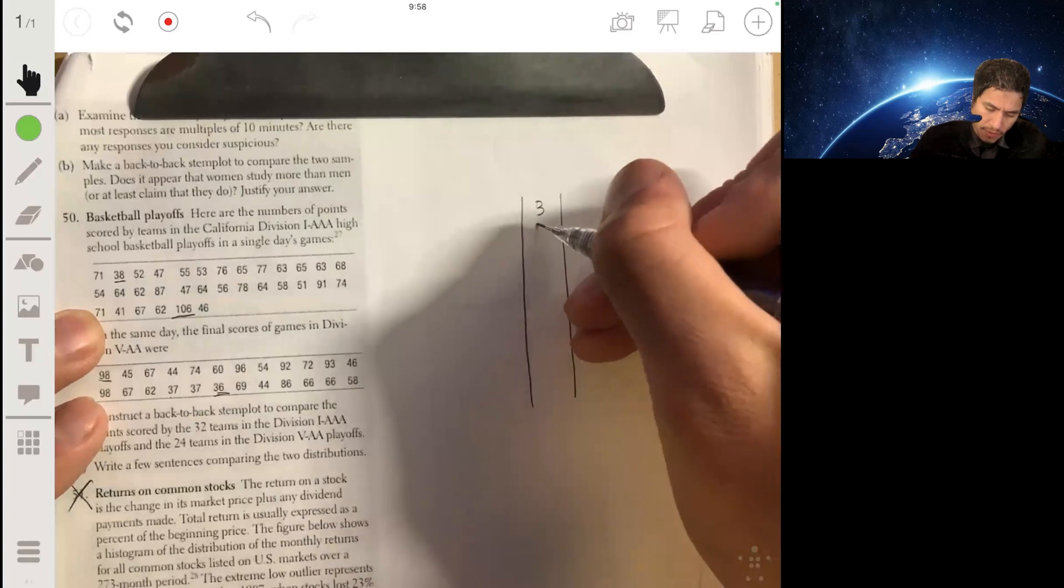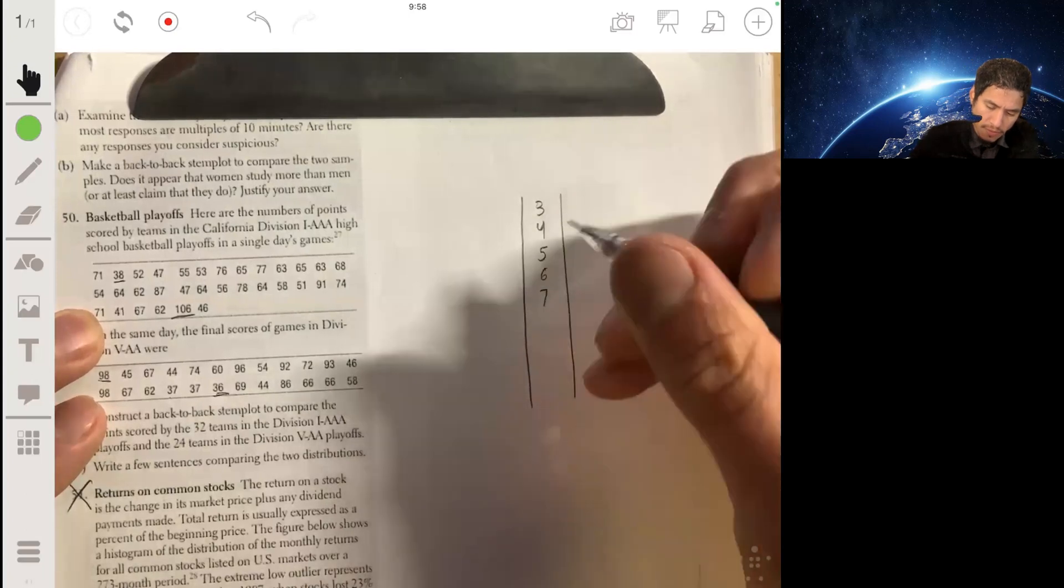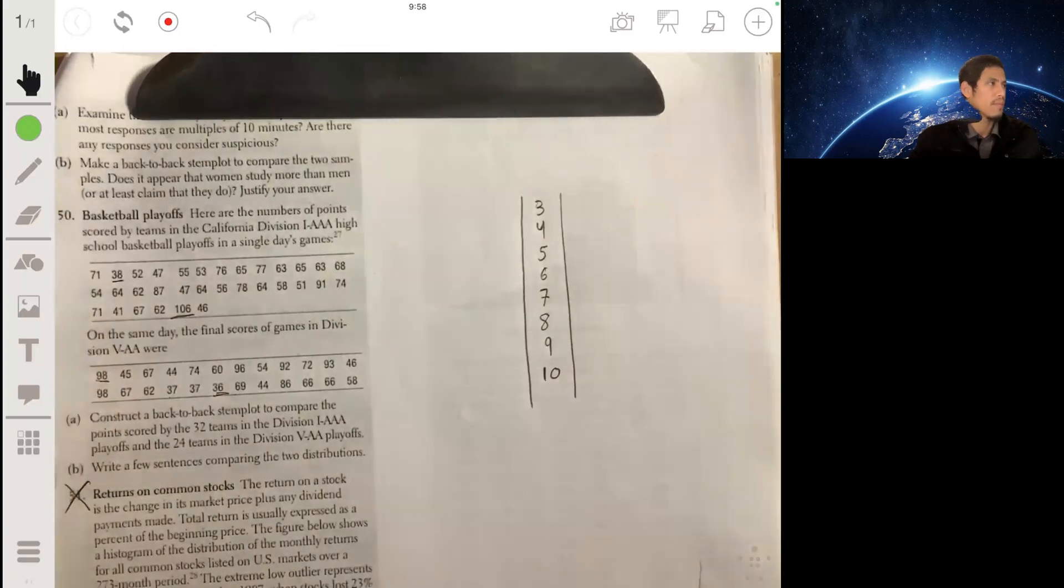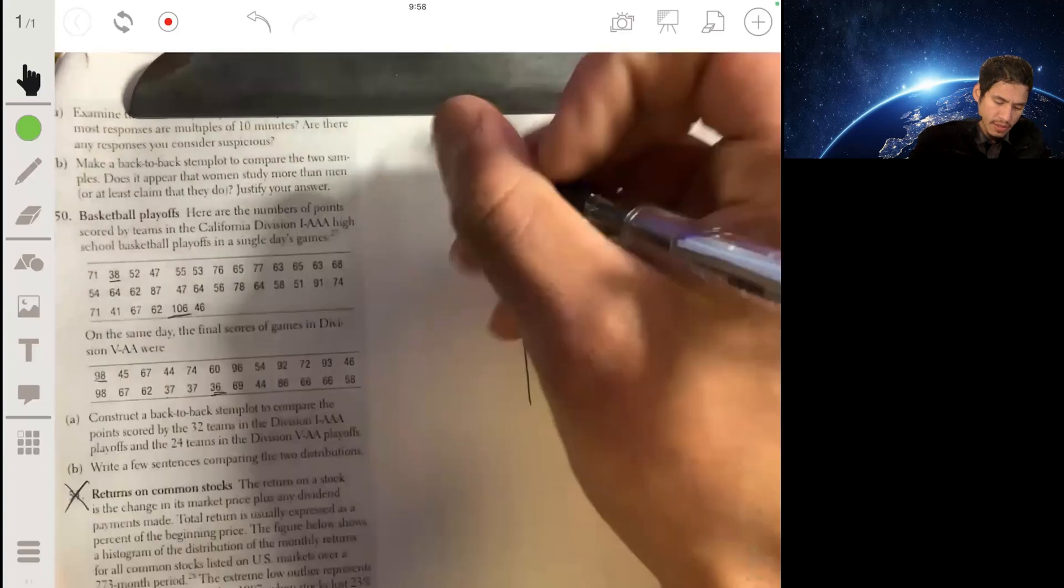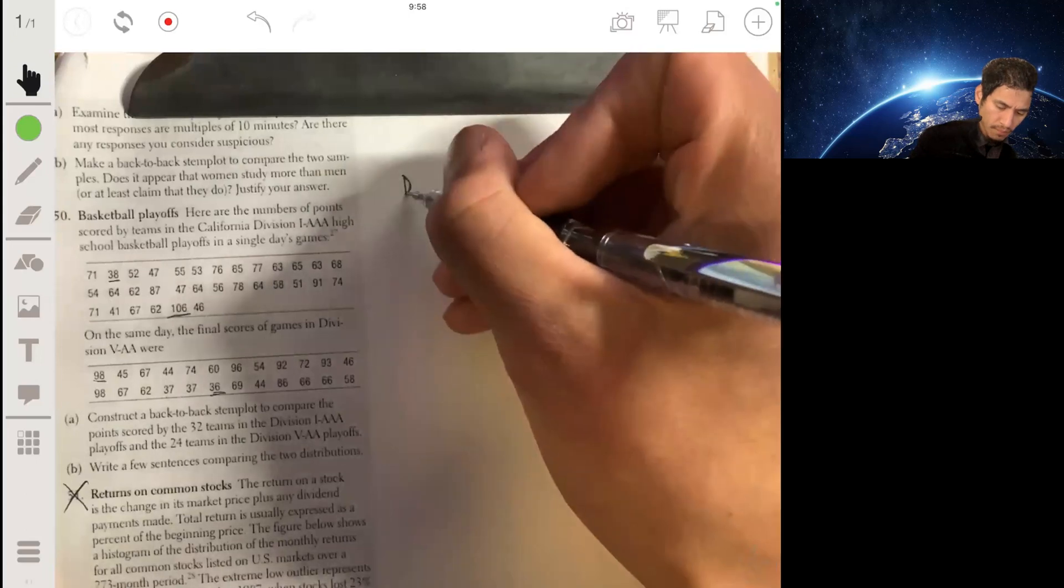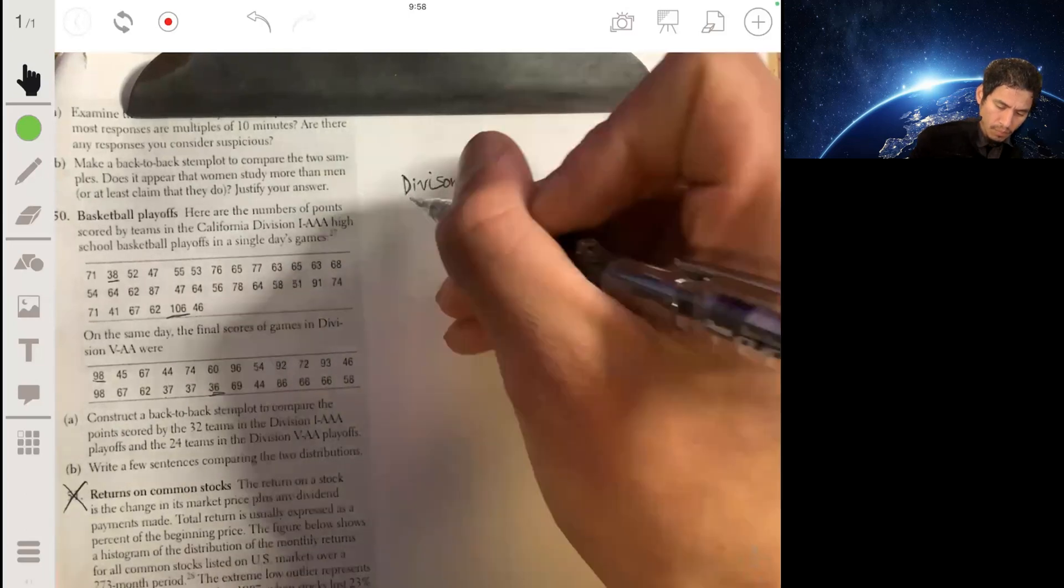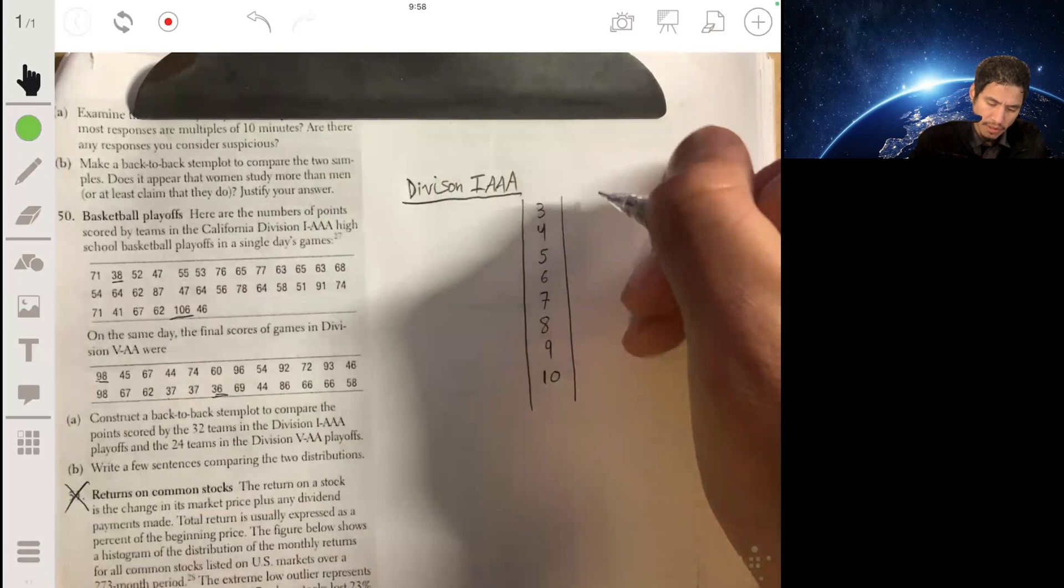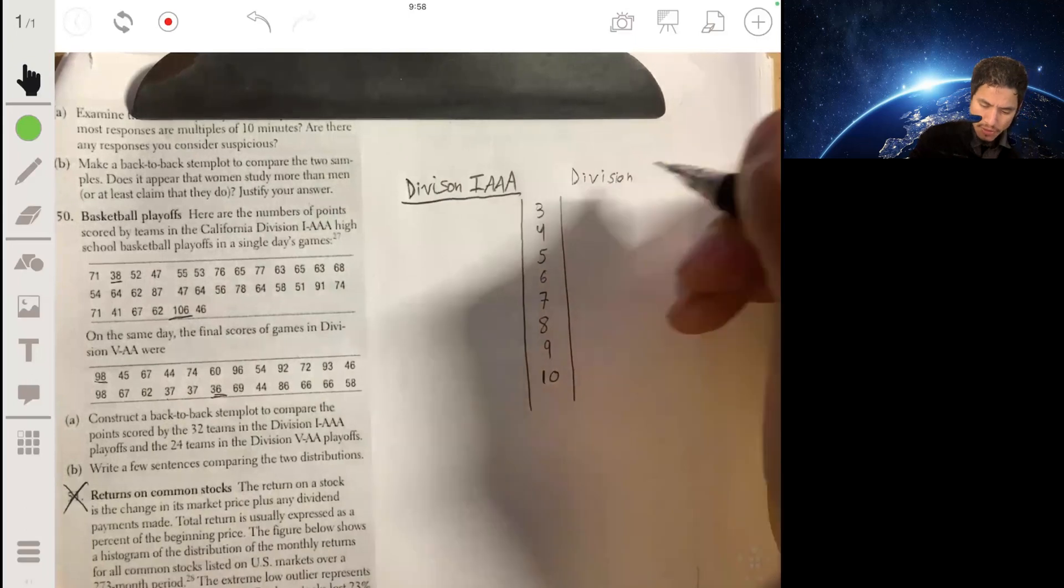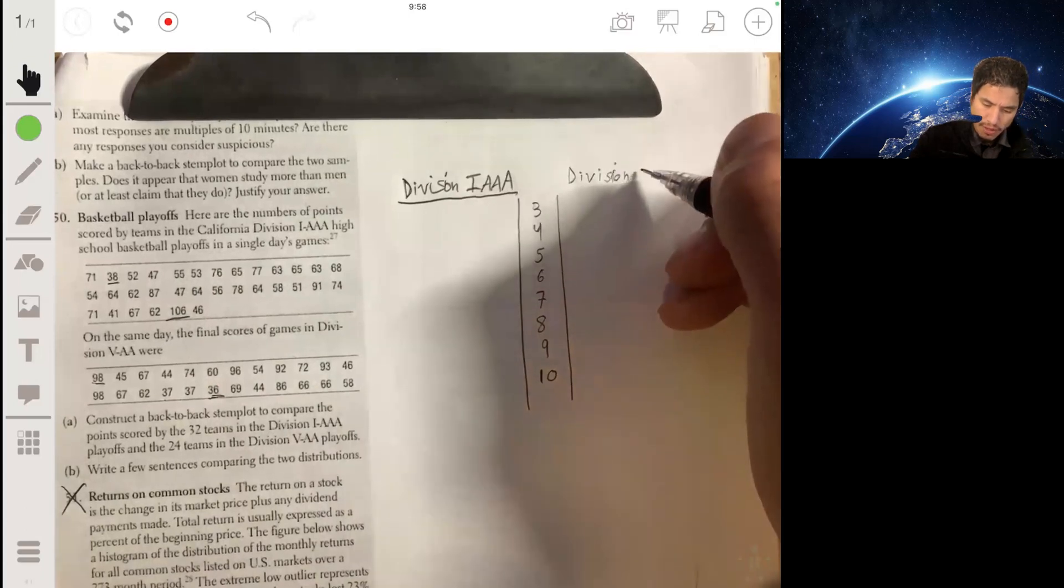Let's start like this: 3, 4, 5, 6, 7, 8, 9, 10. And on this side we'll have the Division 1 Triple A, on this side we'll have Division 5 Double A.